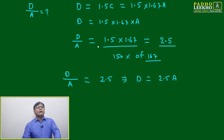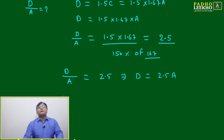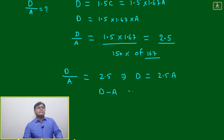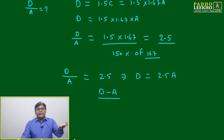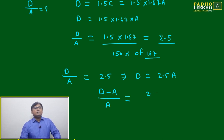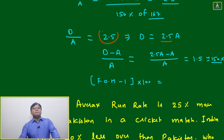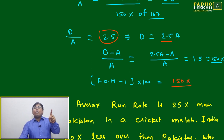So d by a equals 2.5, meaning d is 2.5 times of a. If we extend the question to find the percentage increase — d is how much percentage more than a — we find d minus a divided by a, with base as a. Substituting: 2.5a minus a divided by a equals 1.5, or 150 percent. Directly, factor multiplication minus 1 into 100 percent: factor is 2.5, so 2.5 minus 1 equals 1.5, meaning 150 percent.